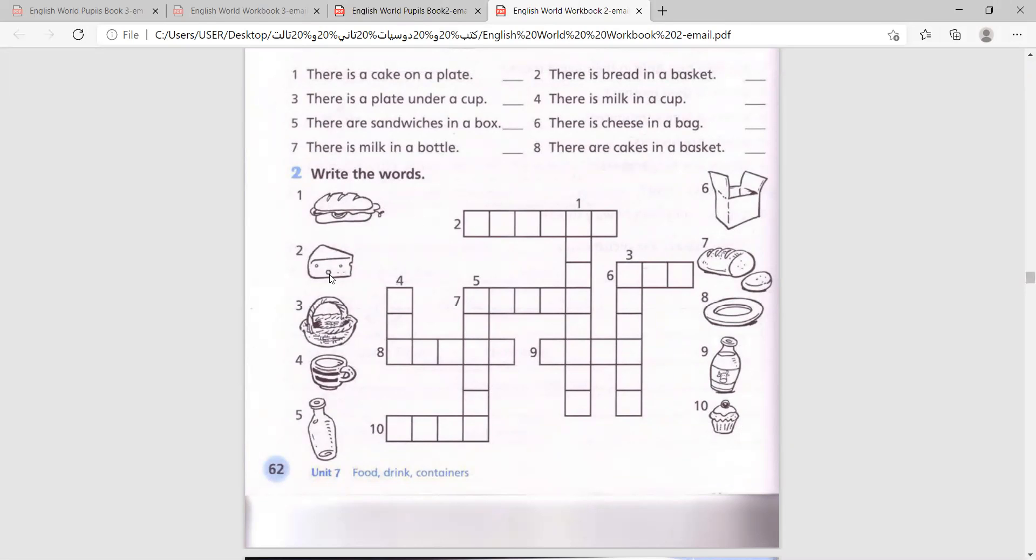Number one, this is a sandwich. Two, cheese. Three, basket. Four, cup. Five, a bottle. Six, box. Seven, bread. Eight, plate. And nine, this is milk. And ten, cake. Now let's do number one.